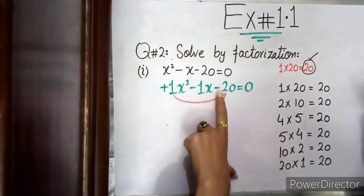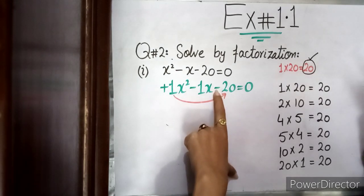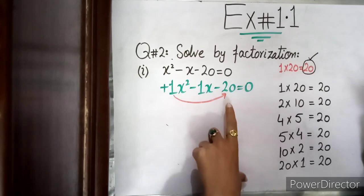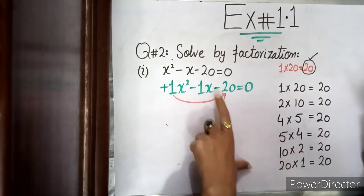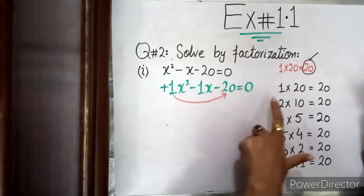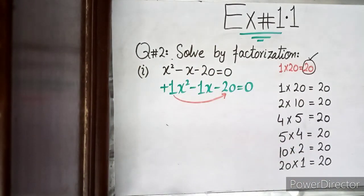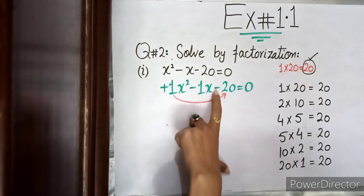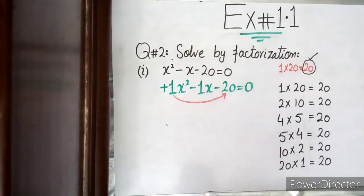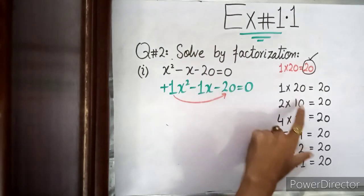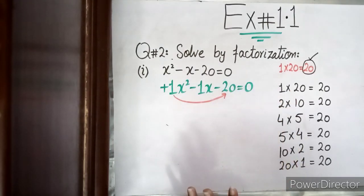Now the game is this: if the last number is minus, then the two factors will have different signs — one plus and one minus. If the last number is plus, the two factors will have the same sign. Here the last number is minus, so both factors will be different signs, meaning one is plus and one is minus, and their difference must equal the middle coefficient.